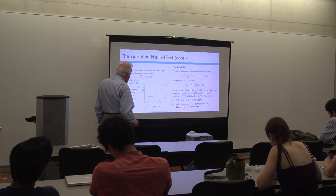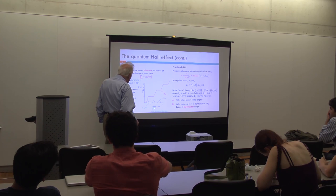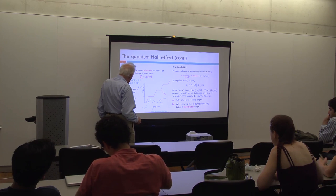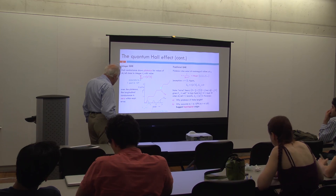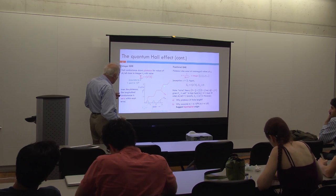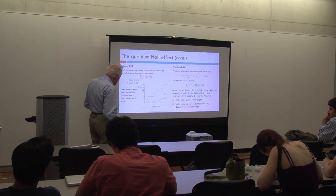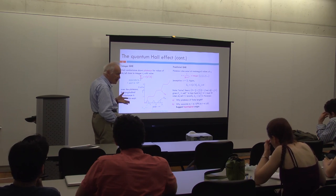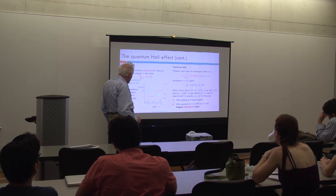The way I'm plotting things is not strictly the traditional way — people usually plot resistance versus magnetic field. Over the plateaus, the longitudinal conductance is zero within experimental error. The regions over which the longitudinal conductance or the longitudinal resistance is zero lie under these plateaus, though the diagram is slightly distorted here.